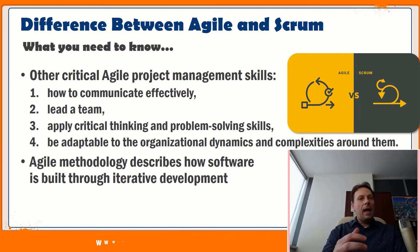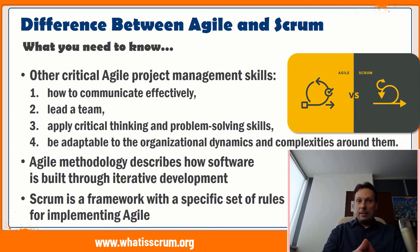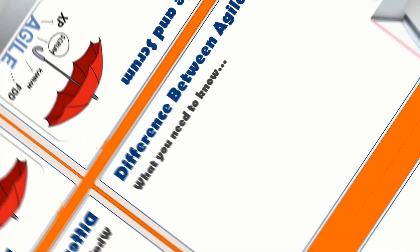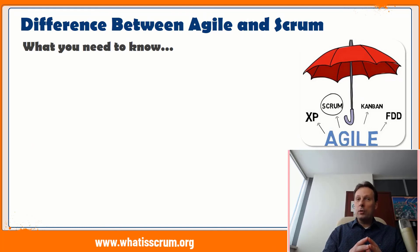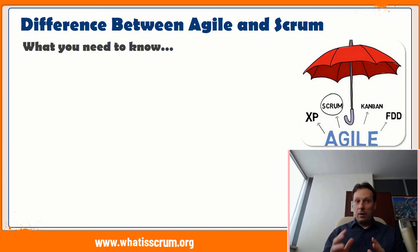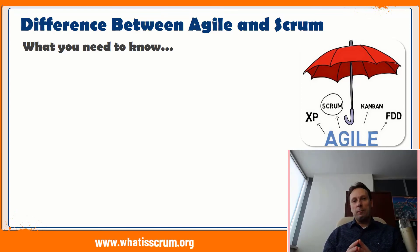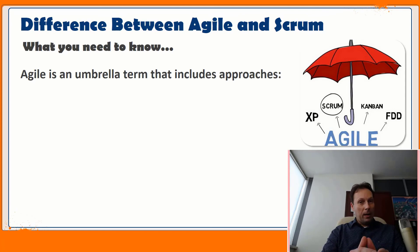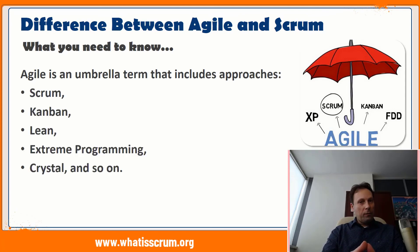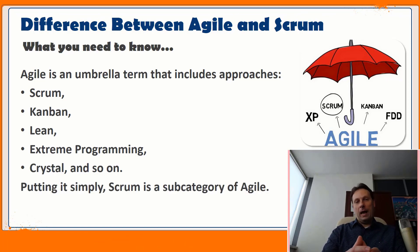So let's conclude. The Agile methodology describes how software is built through iterative development, and Scrum is a framework with a specific set of roles and responsibilities for implementing it. Both Agile and Scrum emphasize the importance of delivering software as early as possible and as frequently as possible. Both are iterative, repetitive processes and accept changes even late in the project. They foster continuous improvement and transparency. Agile is an umbrella term that includes approaches like Scrum, Kanban, Lean, Extreme Programming, Crystal, and so on. Simply put, Scrum is a subcategory of Agile.